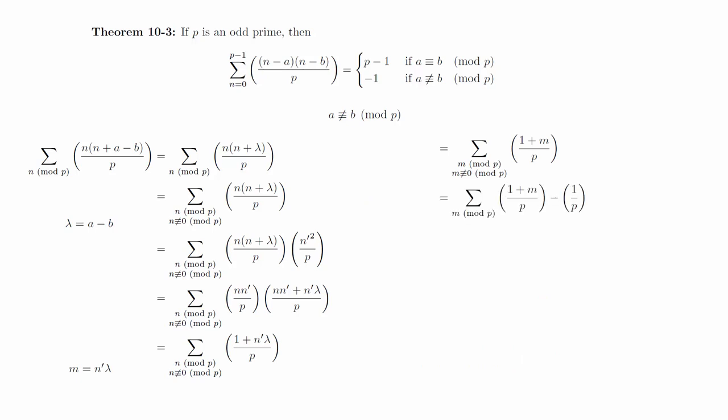We will now reinsert the m congruent to 0 modulo p term into the sum. But notice that this creates an extra nonzero term so we will need to subtract that off. The first term is simply the sum of all the Legendre symbols modulo p. Since there are an equal number of quadratic residues as quadratic non-residues, these terms will all cancel out. Also 1 on p is equal to 1. And this gets us to the desired conclusion.